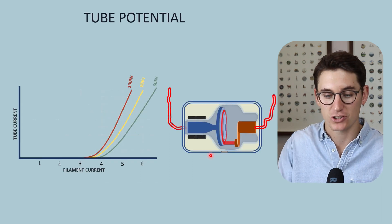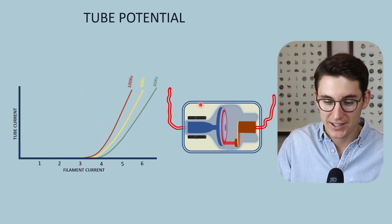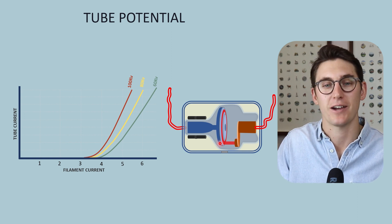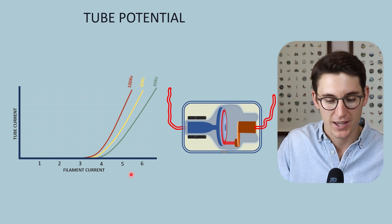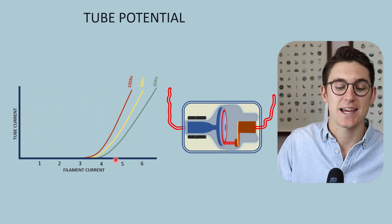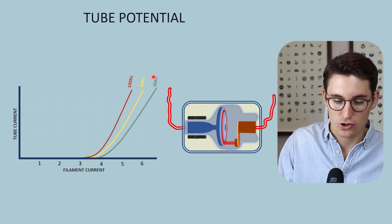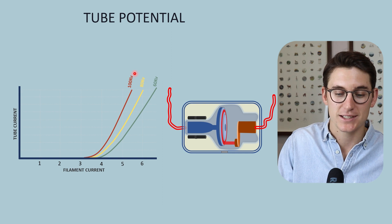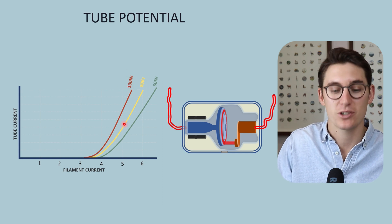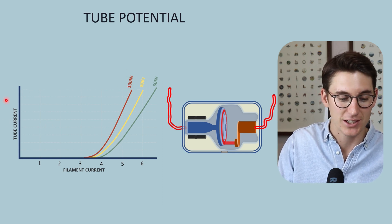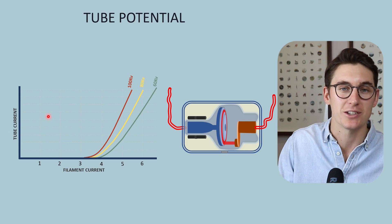Let's take an example. Here is our x-ray tube — we are running a potential difference between our cathode and our anode. At a set filament current, let's say four and a half, we can see that a tube potential of 60 versus 80 versus 100 kilovolts results in a marked difference in tube current, the number of electrons flowing across this space.